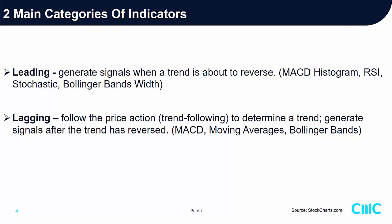Another group of indicators are lagging. They do not lead, but they follow the price action of that tradable instrument — we call it trend-following behavior. This is to determine or reinforce a price action trend and generate signals only after the trend has reversed. Some lagging indicators are MACD, Moving Averages, and Bollinger Bands. Bear in mind that MACD and MACD histogram are different — I will share the difference in the next slide.